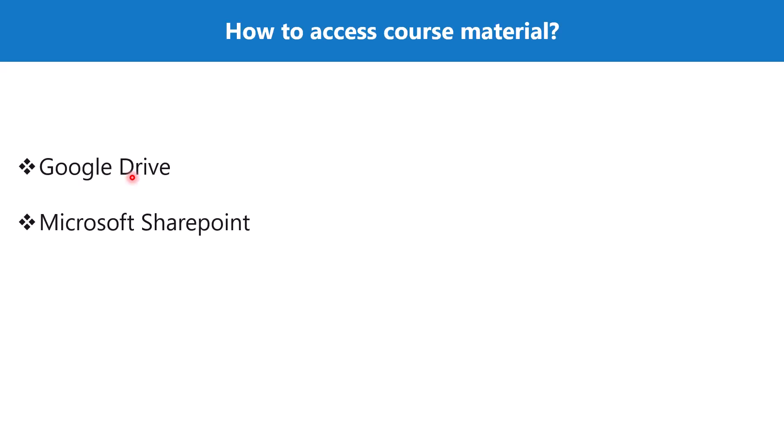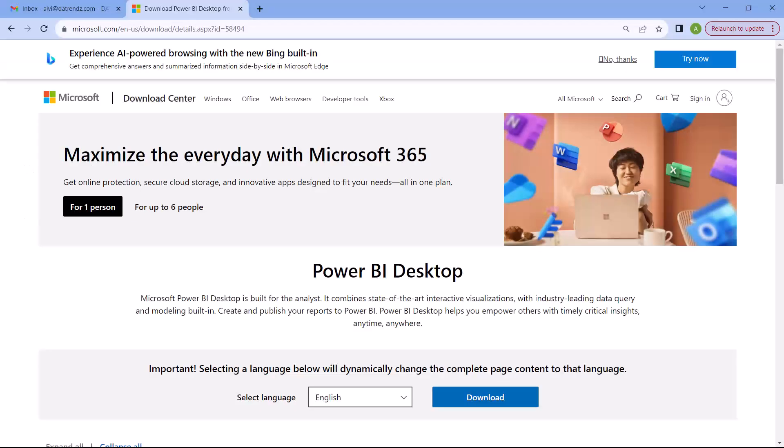For the fourth learning path you will need access to Power BI Service. If you don't have your own account, once you reach that learning path, drop an email and I will give you access to my SharePoint account. Please note that this SharePoint access will be available for just 30 days, so make sure you watch the fourth learning path and complete everything related to Power BI Service within that month.